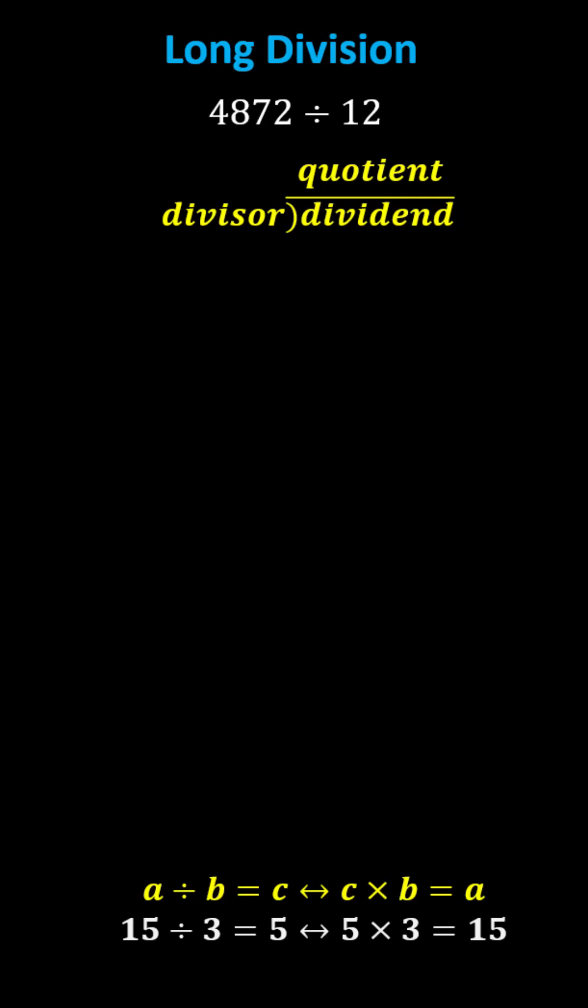In this lesson, we will divide 4,872 by 12 using long division. The first step is to set this up in long division form, where we have the dividend of 4,872 divided by the divisor of 12.